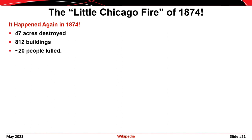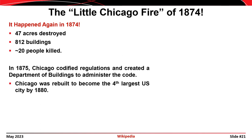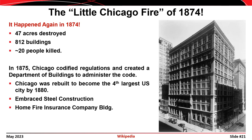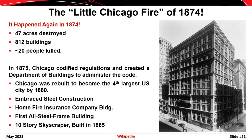If that wasn't bad enough, it happened again in 1874 — called the 'Little Chicago Fire.' In that case, only 47 acres of property were destroyed, 812 buildings burned, and 20 people were killed — making it the 'little' Chicago fire. As a result, in 1875 Chicago codified regulations for buildings and created a Department of Buildings to administer that code. Chicago was rebuilt to become the fourth largest city by 1880, embracing steel construction. The Home Insurance Building, built in 1885, became the first all-steel skyscraper in the United States, featuring a steel core with a masonry stone facade.